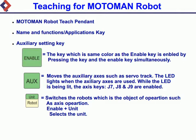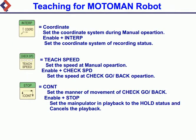Moves the auxiliary axes such as servo track. The LED lights when the auxiliary axes are used. While the LED is lit, the axis keys J7, J8, and J9 are enabled. Switches the robot which is the object of operation, such as axis operation.